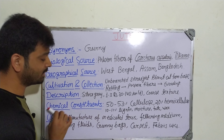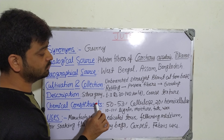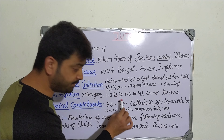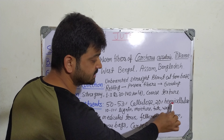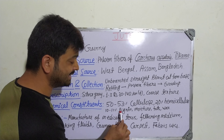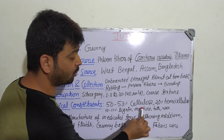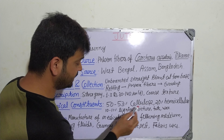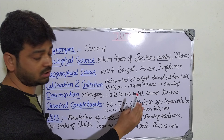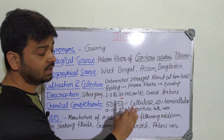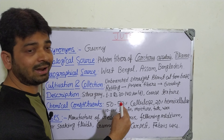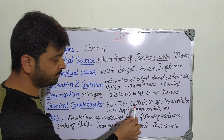Coming to the chemical constituents, what chemicals are present in jute fiber? It contains 50 to 53 percent cellulose, 20 percent hemicellulose, 10 to 11 percent lignin, moisture, fat, and wax. Cellulose, hemicellulose, fat, and wax are similar to cotton — most of the constituents are repeated in plant fibers, so it will be easy to remember. In cotton it was 90 percent cellulose; here it is 50 to 53 percent — that is the main difference.